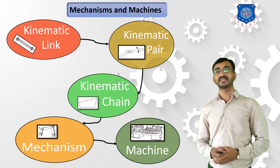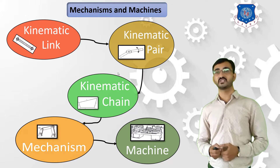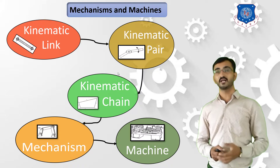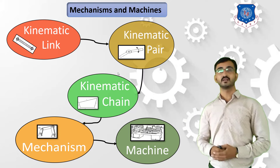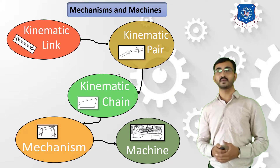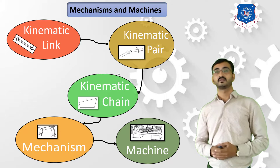In this subject, we will learn the first chapter that is Introduction to Mechanisms and Machines. First of all, we have to learn what is a machine, and to learn about the machine, we have to follow the path as shown. So first we have to learn what is Kinematic Link and then we will study about Kinematic Pair.